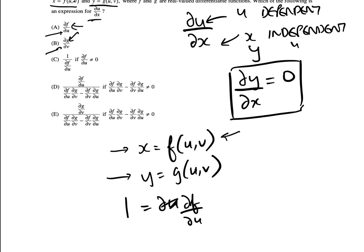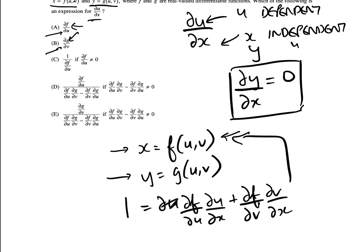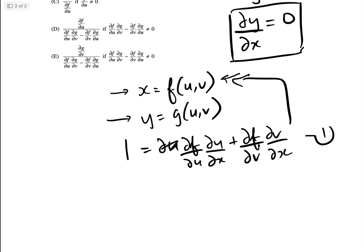Using the chain rule, we get: 1 equals ∂f/∂u · du/dx plus ∂f/∂v · dv/dx. That comes from differentiating our first equation x = f(u,v) with respect to x. Let's call that equation 1.